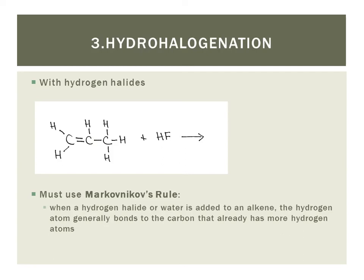To decide where each atom will end up, we use something called Markovnikov's rule, which is sometimes stated as the rich get richer. This rule states that when a hydrogen halide or even water, as we'll see, is added to an alkene, the hydrogen atom generally ends up on the carbon that already had more hydrogen atoms to begin with. So the carbon that was already richer in hydrogen atoms ends up even richer in hydrogen atoms.